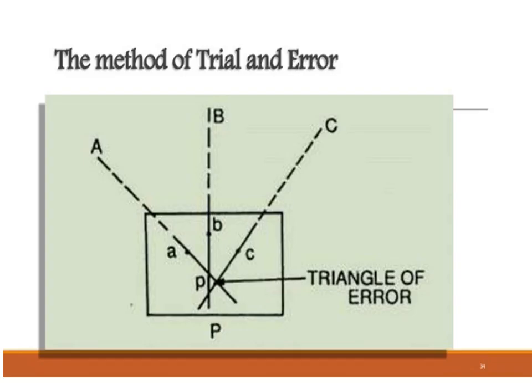This slide refers to the trial and error method in the three-point problem, where capital A, B, and C are the three well-defined objects on the site and small a, b, and c are the corresponding locations on the paper. Small p is the position of point P on the paper and capital P is its position on the ground. When lines of sight are established, they form the triangle of error shown in the diagram. We must eliminate this triangle and select one point where all lines of sight from p to A, p to B, and p to C converge at a single station.